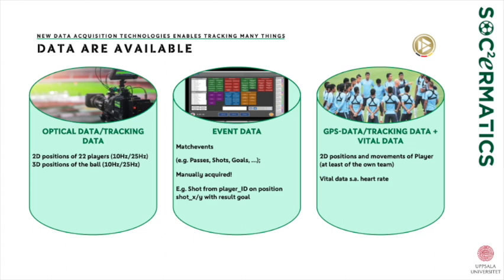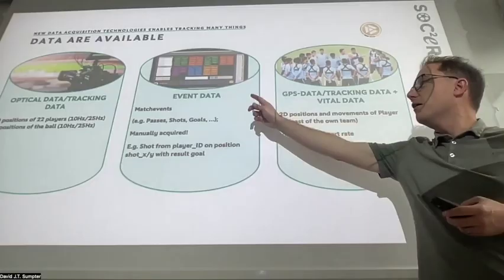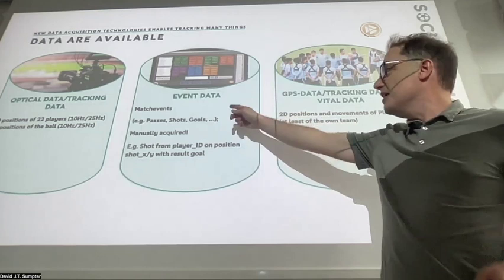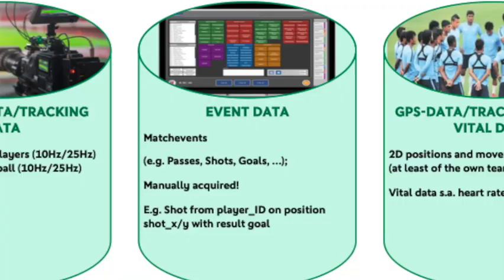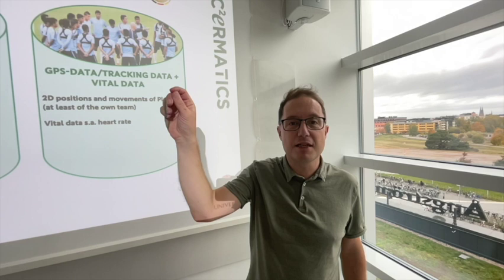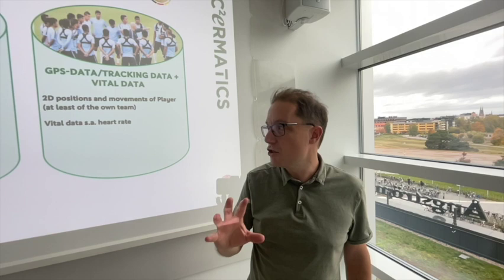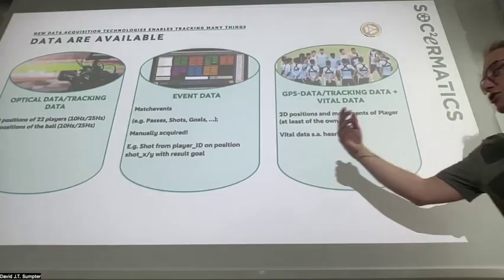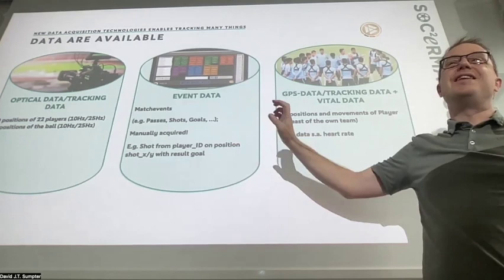What we've looked at so far is event data — match events, passes, shots, goals. It's important to note that this is actually manually acquired: there is a person in the stadium who notes down when all of these passes and events occur during the match, recording the shot, the player, and so on. You should be pretty familiar with this kind of stuff by now.